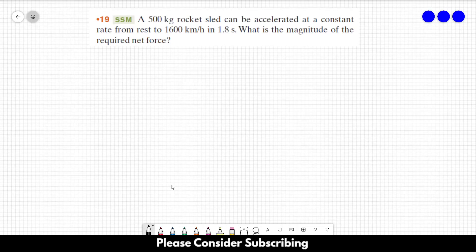Number 19: A 500 kilogram rocket sled can be accelerated at a constant rate from rest to 1600 kilometers per hour in 1.8 seconds. What is the magnitude of the required net force? Well first, let's convert this final velocity to meters per second.